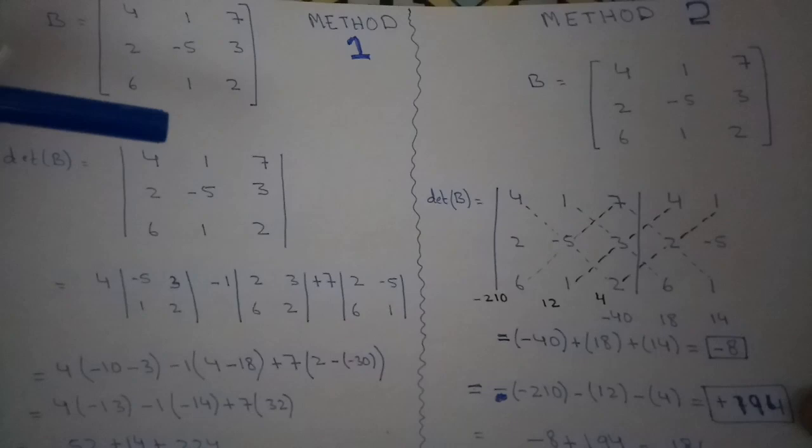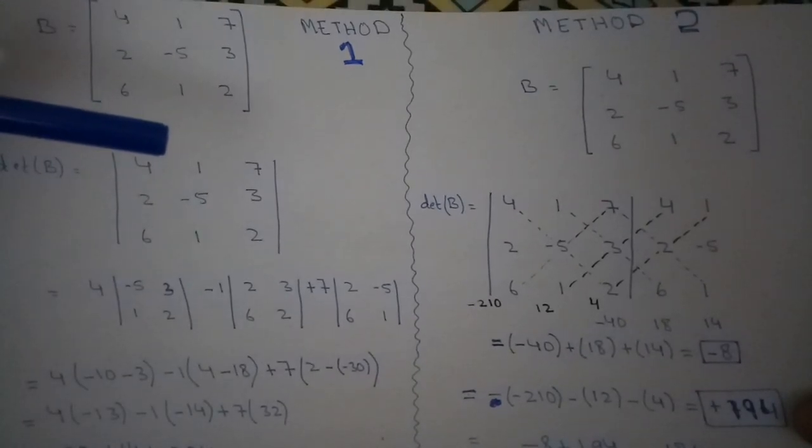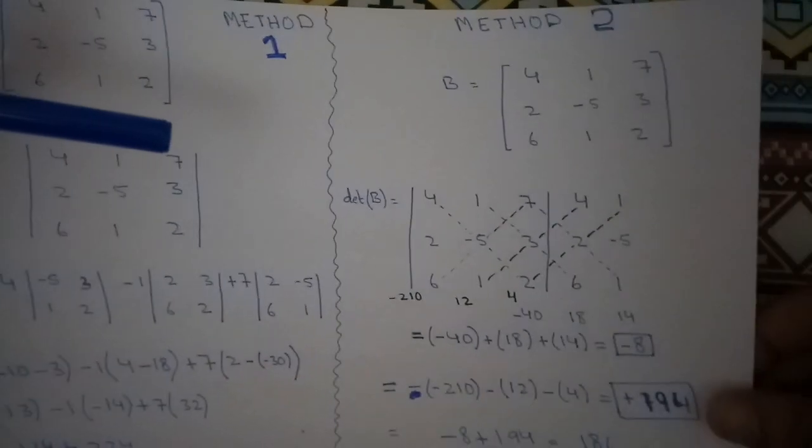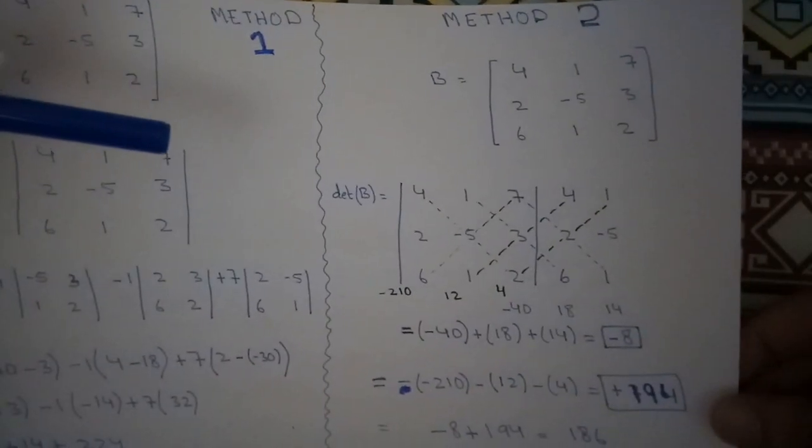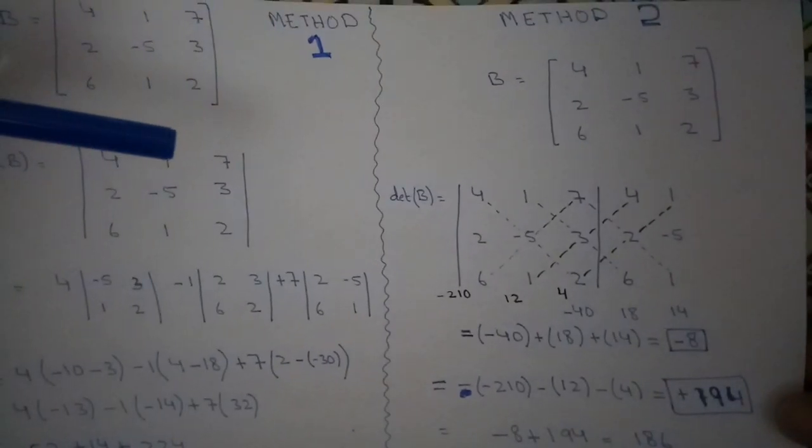This was the method 1 of finding out the determinant of the matrix 3 by 3. Now, we are doing the same question and solving that with method 2.